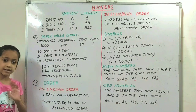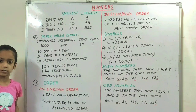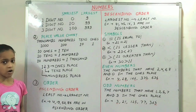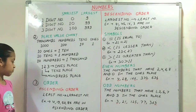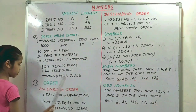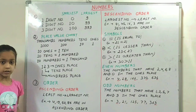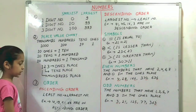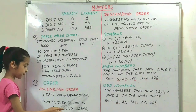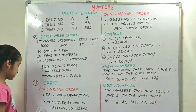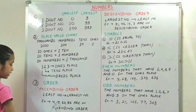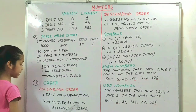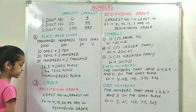Order is ascending order and descending order. We can call descending order decrease in order also. In ascending order you have to arrange the numbers from the least number to the largest number. Example: 4, 19, 50, 86 are in ascending order.